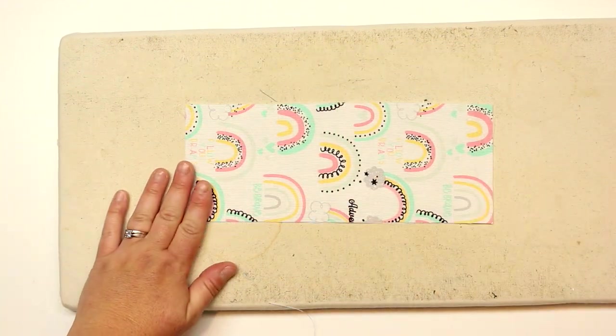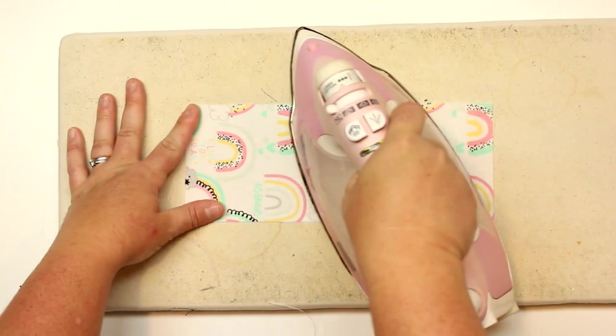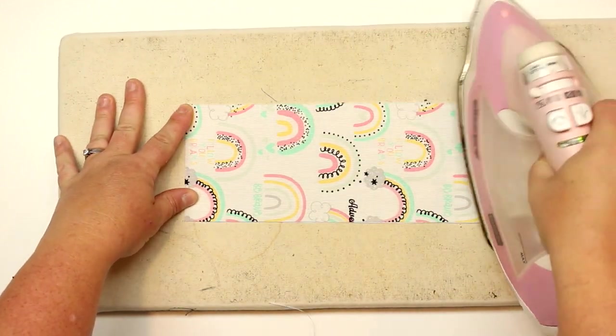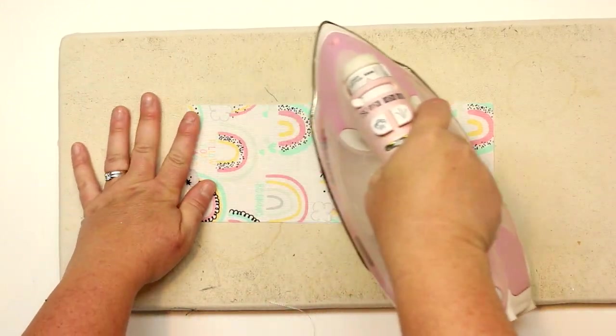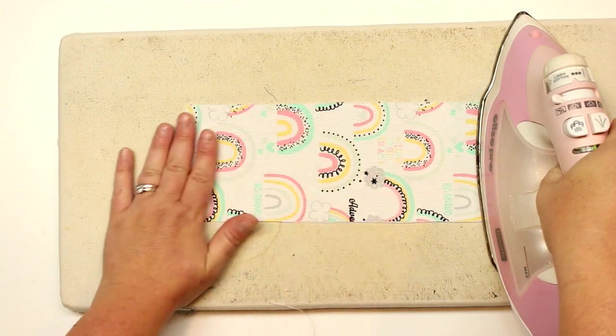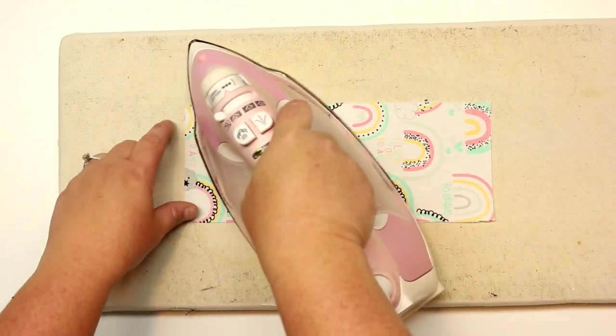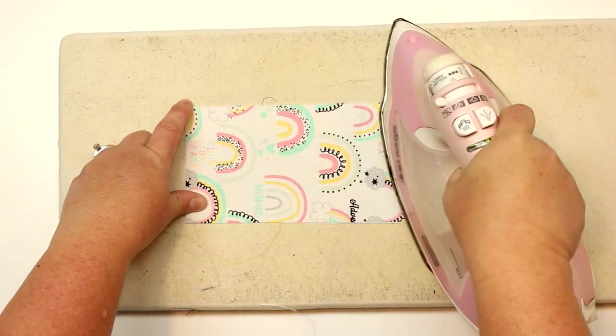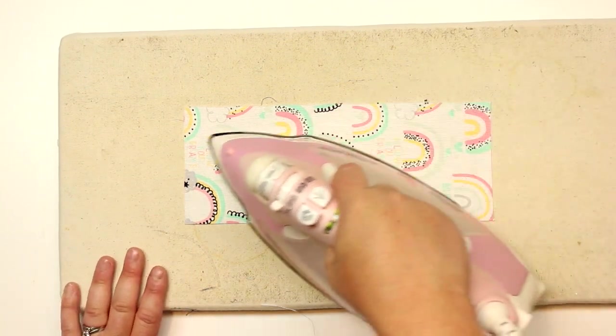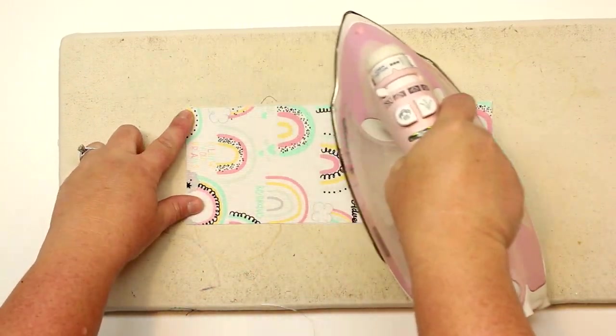The interfacing has sort of a rough backing to it and that's the glue. When you put it down with the glue side on the wrong side of the fabric, it's going to melt when you apply your heat. I like to iron from the right side of the fabric. Every interfacing is different. This is just a regular medium white from a company called Pellon, so you can find that at your local craft store.